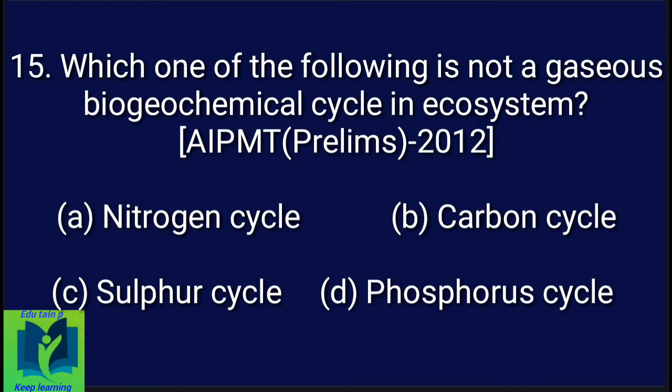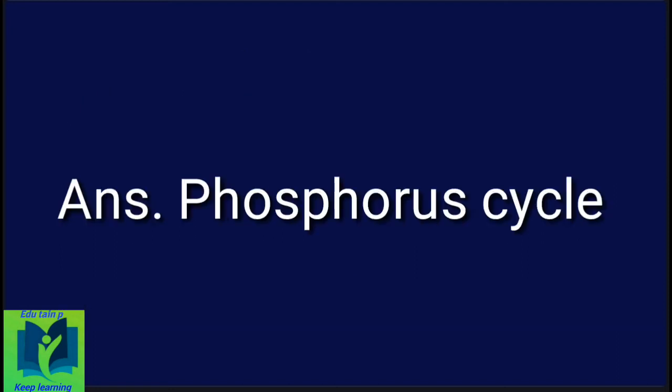Which one of the following is not a gaseous biogeochemical cycle in an ecosystem? Option A: Nitrogen cycle. Option B: Carbon cycle. Option C: Sulfur cycle. Option D: Phosphorus cycle. Answer: Phosphorus cycle.